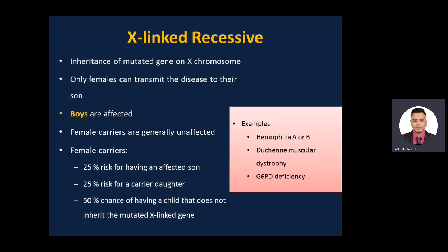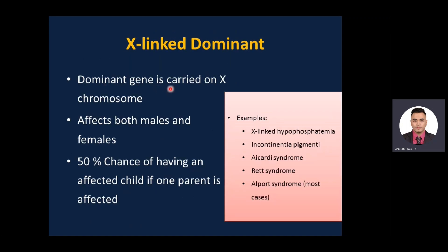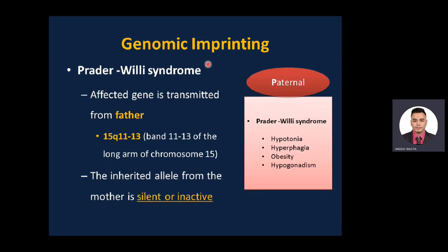X-linked dominant: the dominant gene is carried on the X chromosome and affects both males and females. There is a 50% chance of having an affected child if one parent is affected. Diseases associated with X-linked dominant are very rare. Examples: X-linked hypophosphatemic rickets, incontinentia pigmenti, Aicardi syndrome — which involves agenesis of corpus callosum, infantile spasms, and chorioretinal lacunae — and Alport syndrome, which involves deafness, hematuria, and renal failure.